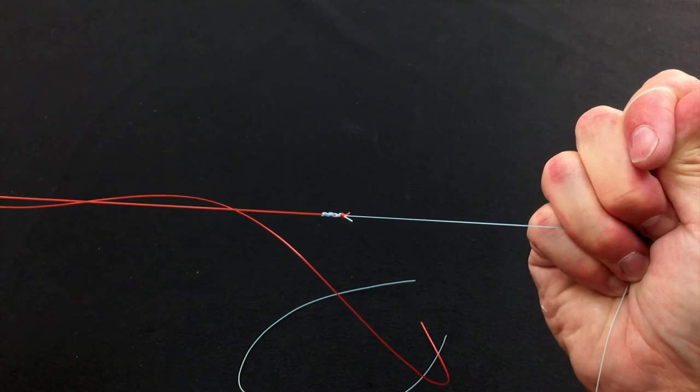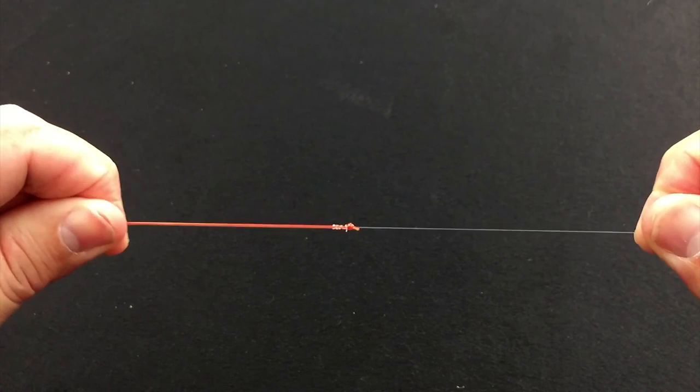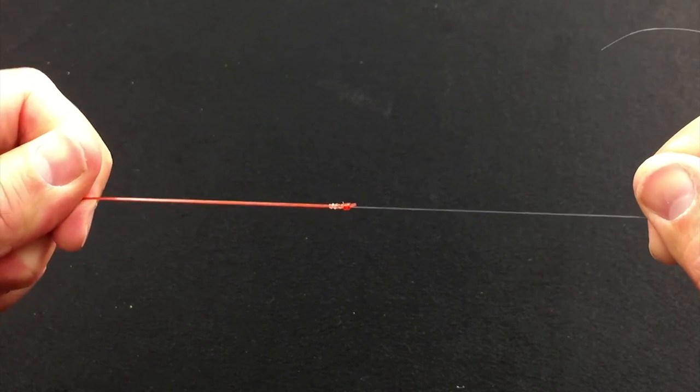So that's what it looks like in the thick material. This is what it looks like when you tie some thin 10-pound material in this case to the thick stuff. It's a very strong, very easy to tie knot. And that's the Slim Beauty.